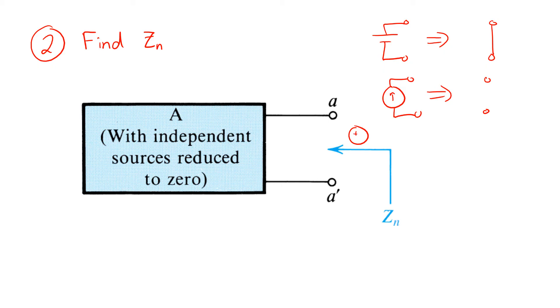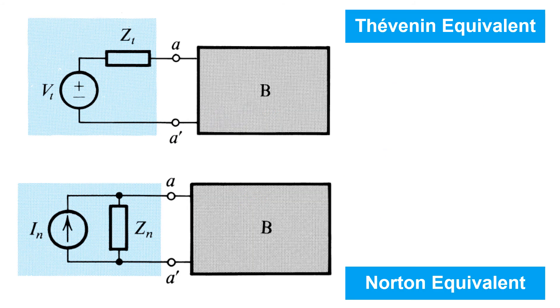Having done that, we apply our test source at the two ports, for example, a voltage source Vx, and find the resulting current Ix, and Zn is the ratio Vx over Ix, just as before. Just to be totally clear, this is exactly the same as the procedure for the Thevenin equivalent.